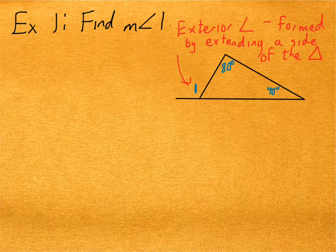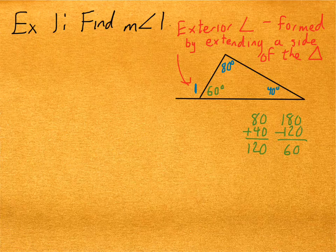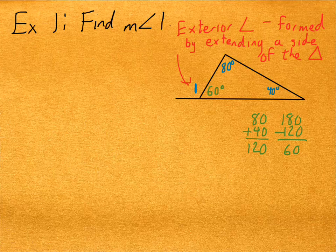Let's use the knowledge that we have to figure out the measure of angle one. I know the angles inside the triangle add up to 180. So if I add 80 and 40, that's 120, and I subtract that from 180, then I would get the measure of the remaining angle inside. That's 60. So the measure of this angle is 60 degrees. So how would I get the measure of angle one?